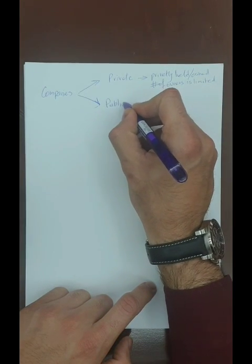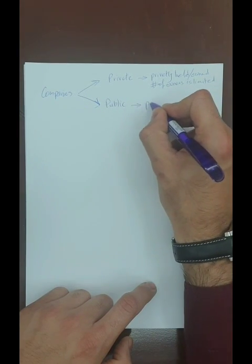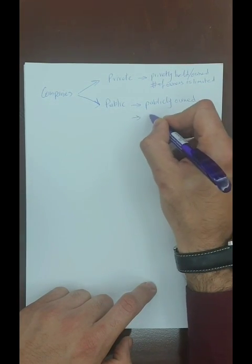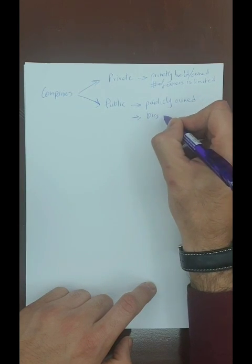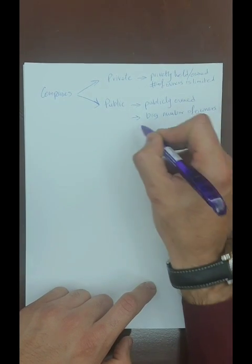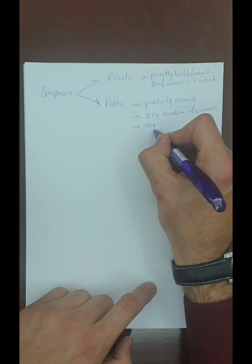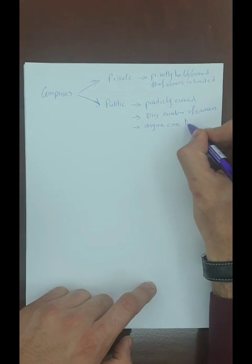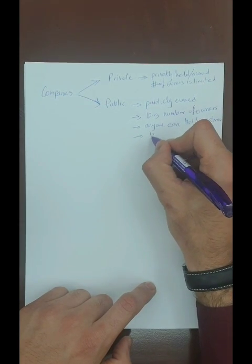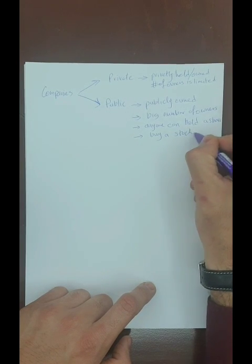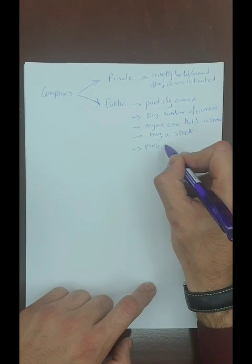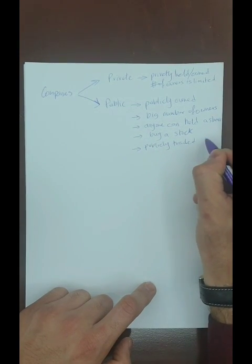On the other hand, public companies are, from the name, publicly owned or held. They have a large number of owners. Anyone can hold a share, or in other words, buy a stock in that company. Such companies are publicly traded in stock exchanges.